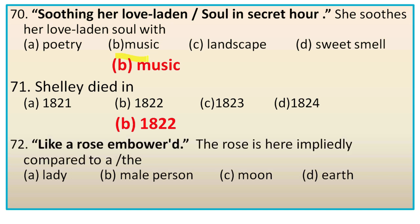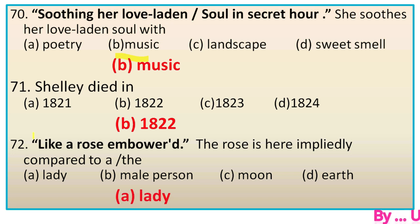Question 72: 'Like a rose embowered.' The rose is here impliedly compared to — options: a lady, a male person, moon, art. This is part of stanza 11, and here we find 'like a rose embowered in his own green leaves.' The rose is impliedly compared to a lady. So the right option is A, a lady.